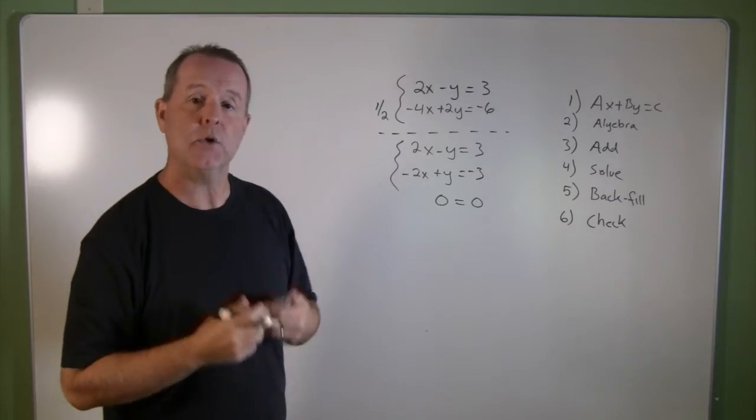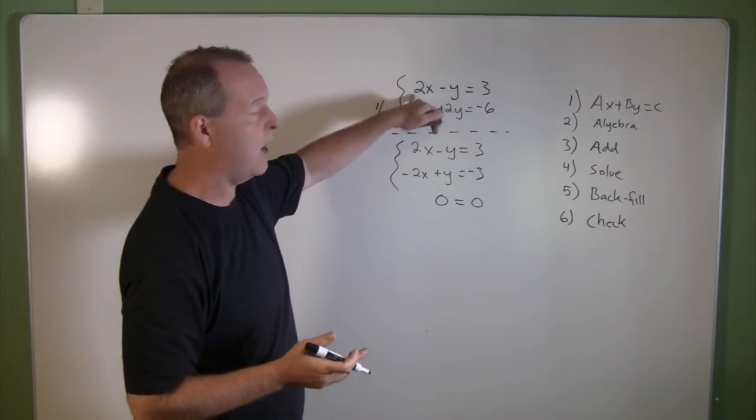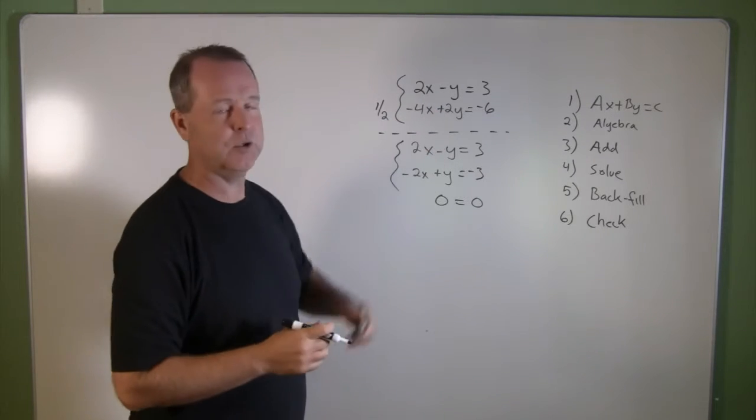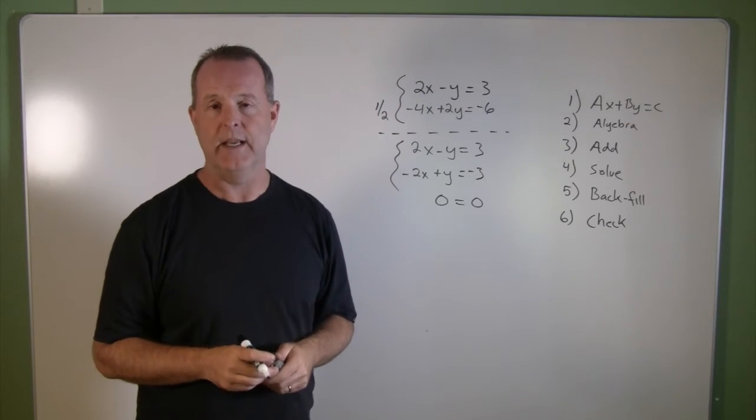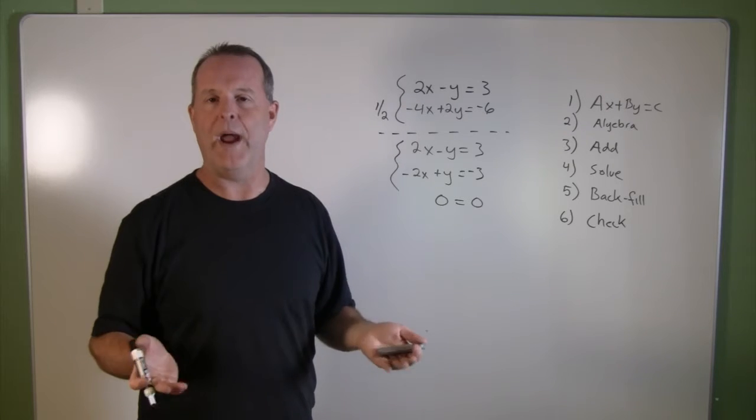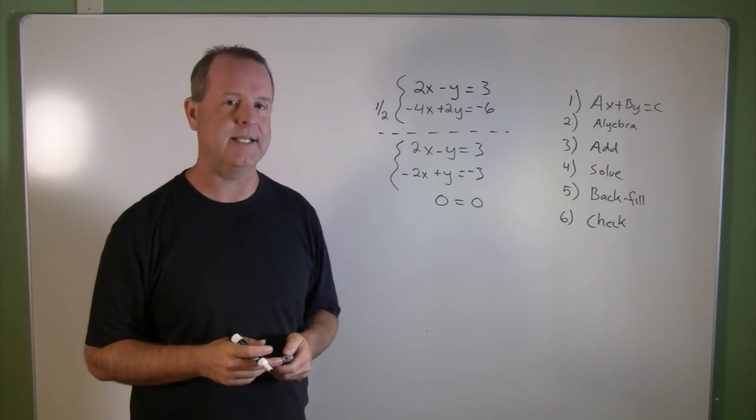Zero does equal zero. So that means that any solution for one equation is a solution for the other equation. And this is what happens when we have a dependent system of equations.